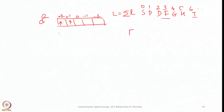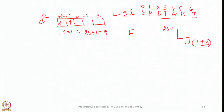For d2, ΣmL = 3, so the term is F. S = 1, therefore 2S+1 = 3. Recall the term symbol format: (2S+1)LJ, where J = L+S if the subshell is more than half-filled, or J = L−S if less than half-filled. For d2 (less than half-filled), J = L−S = 3−1 = 2, giving the ground state term symbol ³F₂. Similarly we can determine the term symbol for f3.